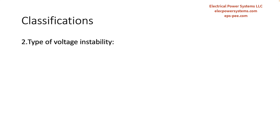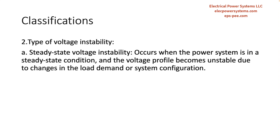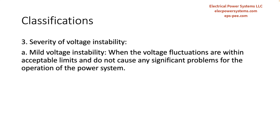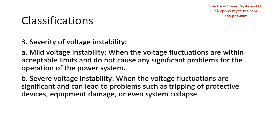Regarding the type of voltage instability: steady-state voltage instability occurs when the power system is in a steady state condition and the voltage profile becomes unstable due to changes in load demand or system configuration. Dynamic voltage instability occurs when there are rapid changes in the power system, such as during a fault or sudden changes in load demand, which can cause voltage fluctuations. In terms of severity, mild voltage instability is when the voltage fluctuations are within acceptable limits and do not cause significant problems, while severe voltage instability is when the fluctuations can lead to tripping of protective devices, equipment damage, or even system collapse.